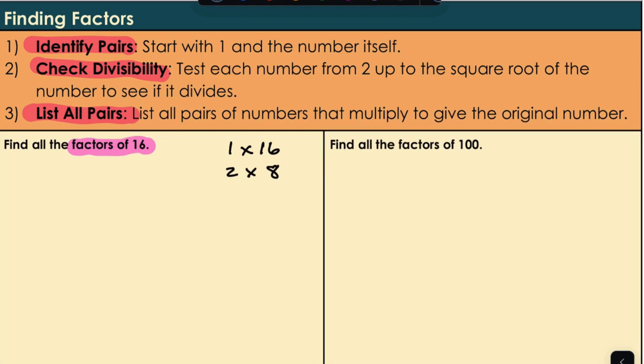What about 3? No, 3 does not go into 16. What about 4? Yes, 4 multiplied by 4. Our second rule says test each number from 2 up to the square root of the number. Now 4 is the square root of 16. We don't need to test any more values. So our factors of 16 are...